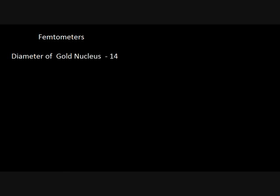I went online to find measurements of the gold atom. The unit of measurement used to measure things as small as atoms is a femtometer. The nucleus of the gold atom is 14 femtometers. The diameter of the entire gold atom is 288,200 femtometers.